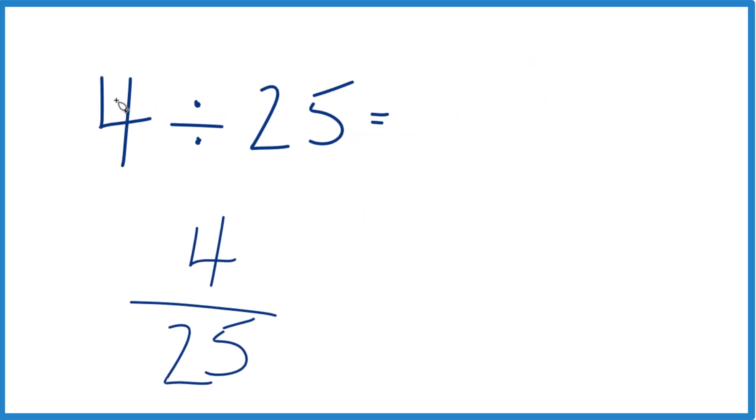So what we want to do is see 4 divided by 25. How many times does 25 go into 4? We'll write it like this, and 25 doesn't go into 4.